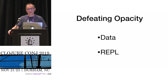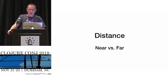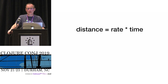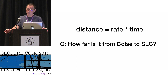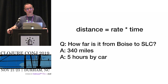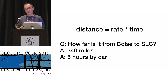Our final horseman is distance — the idea of near-at-hand versus far-away. We know from elementary school that distance is not just linear but also in time: distance equals rate times time. How far is it from Boise to Salt Lake City? 340 miles, or five hours by car — both acceptable answers, one a linear distance and one a temporal distance. Either way gives you an idea of how far away it is, and either way it's pretty far if you need to get there immediately.